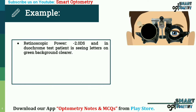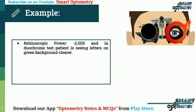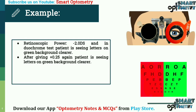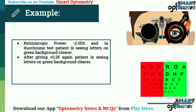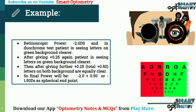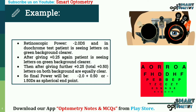Let's try with an example. The retinoscopic power is minus 2 diopters spherical. In the duochrome test, the patient is seeing letters on the green background clearer. After giving plus 0.25, the patient is still seeing letters on the green background clearer. Then after giving a further plus 0.25 — total plus 0.50 — letters on both backgrounds are equally clear. So the final power will be minus 2 plus 0.50, or minus 1.50 diopters spherical as the spherical endpoint.